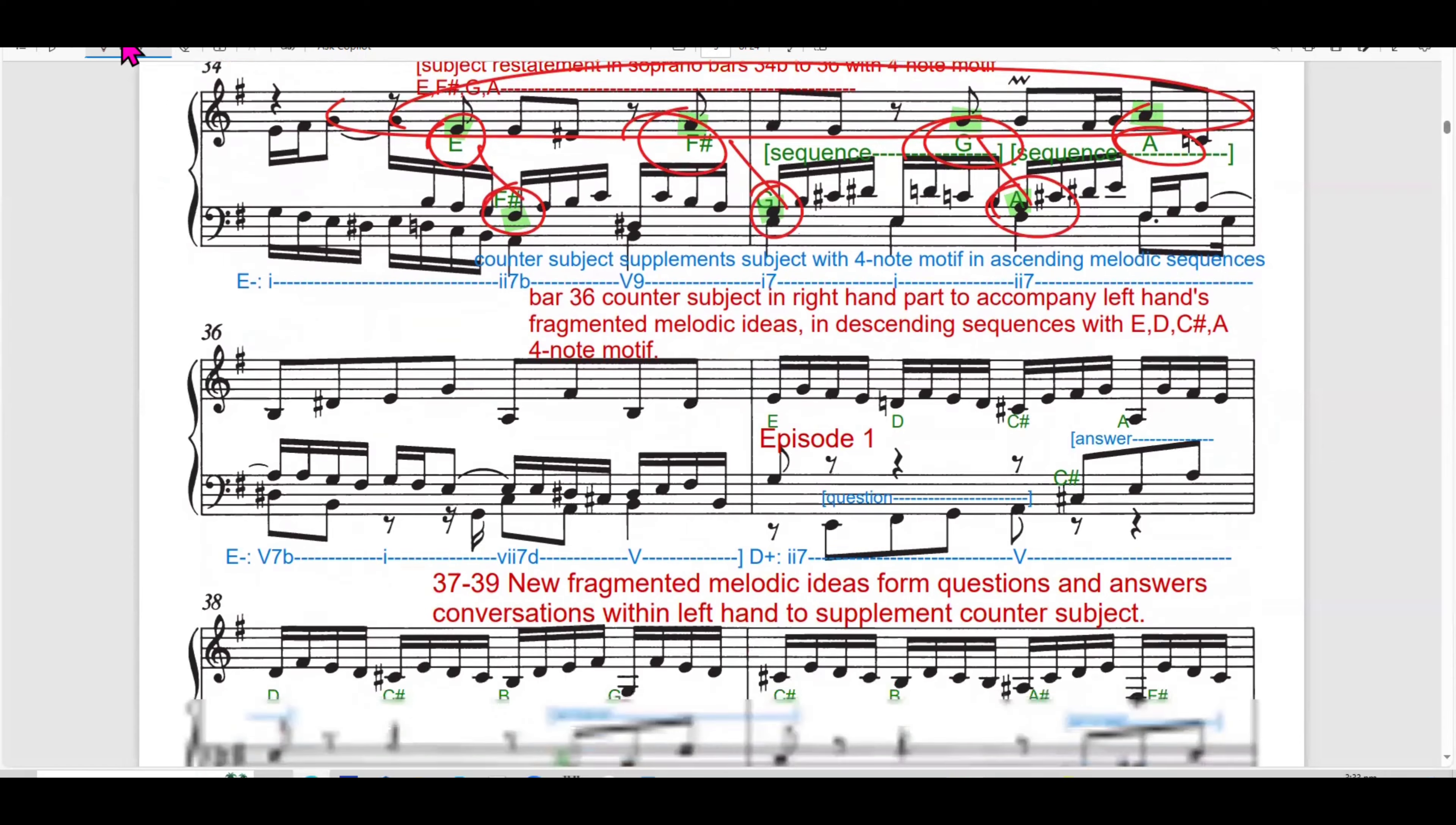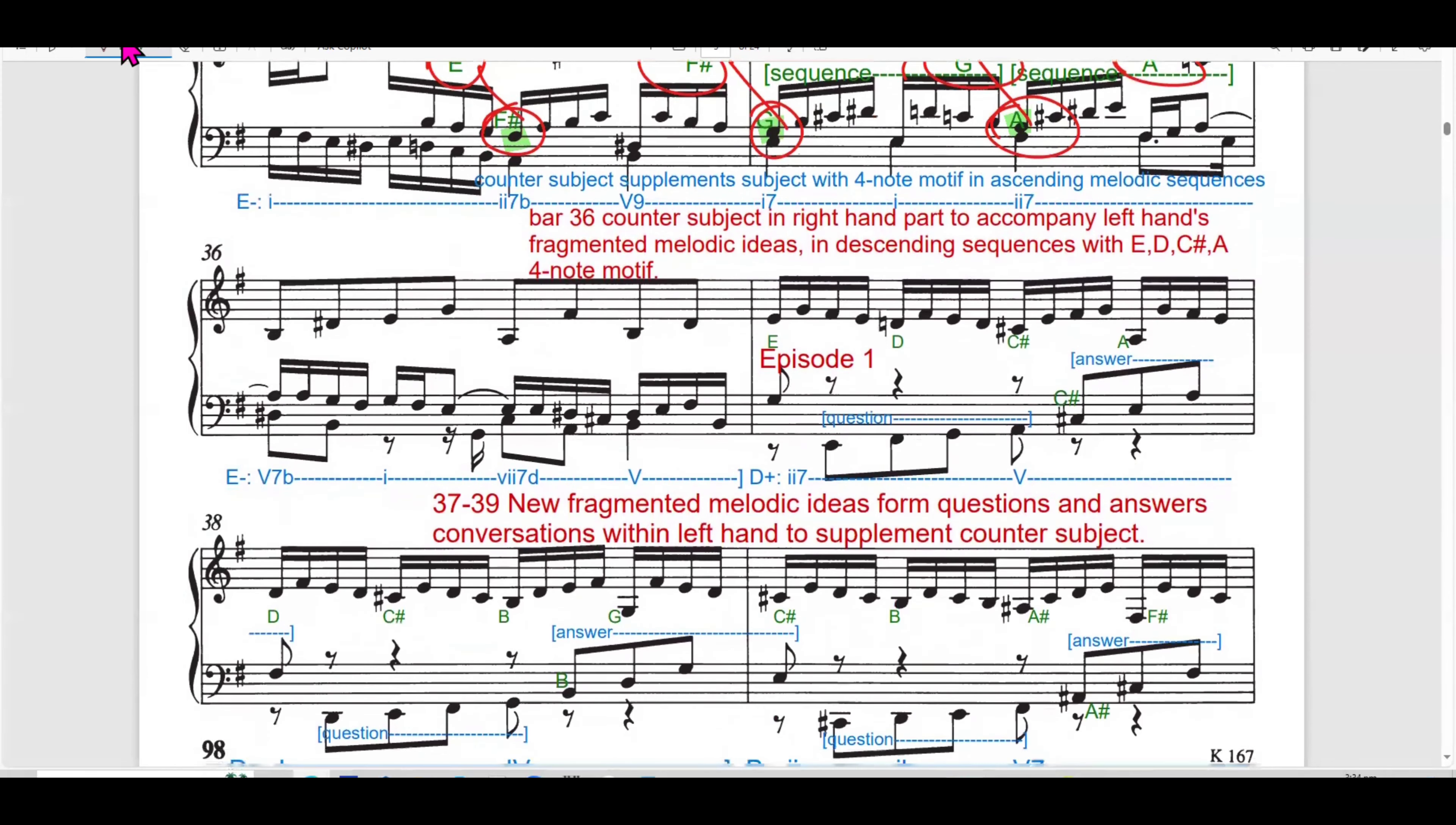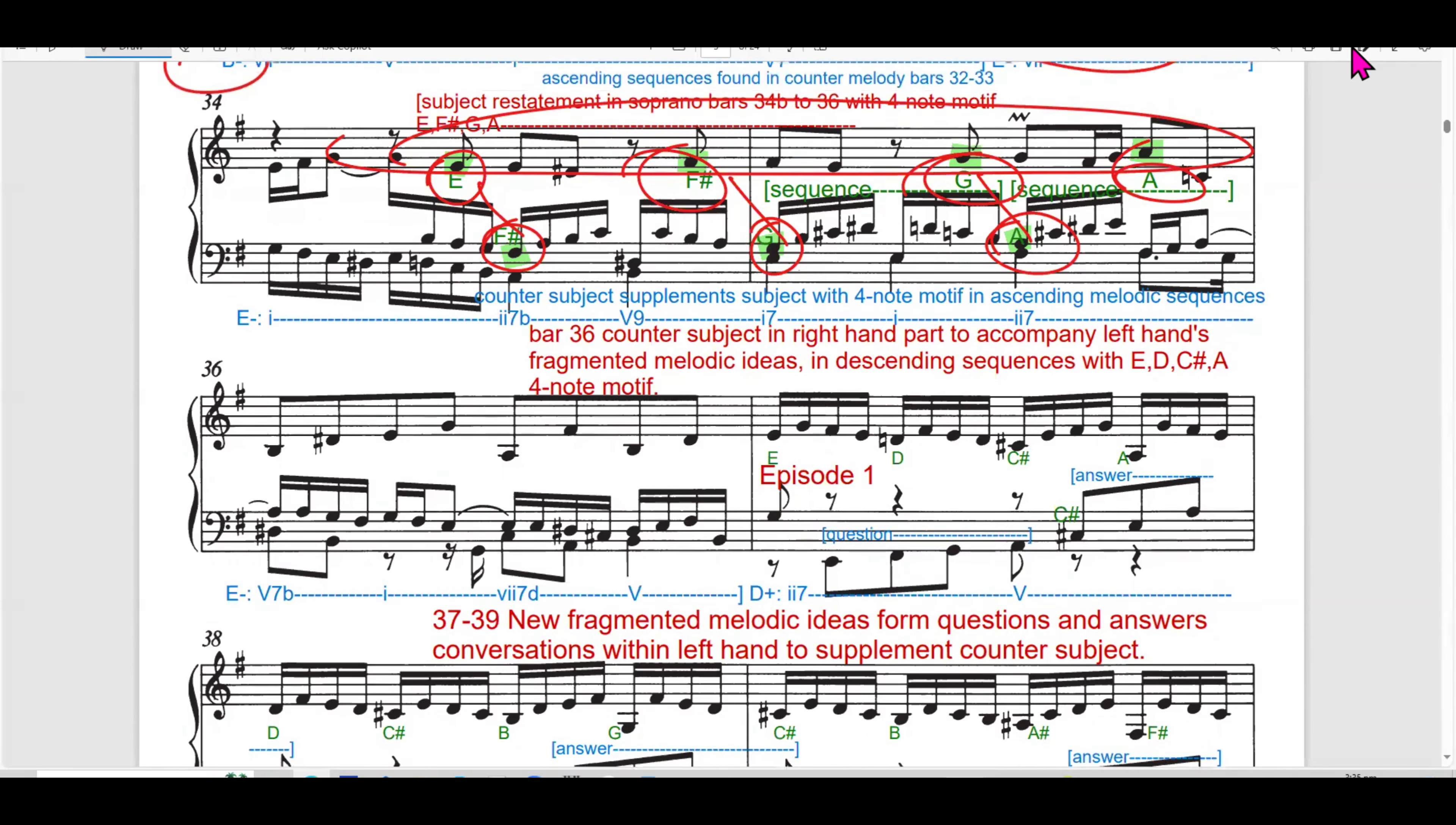It begins to create a two-voice texture where the independent lines move rhythmically and melodically in dialogue. And the ascending sequence in counter subject create a sense of outward motion, pulling the music forward harmonically and melodically. Bach is setting the stage for further exploration of subject and counter subject. So look further in bar 30 to 31.